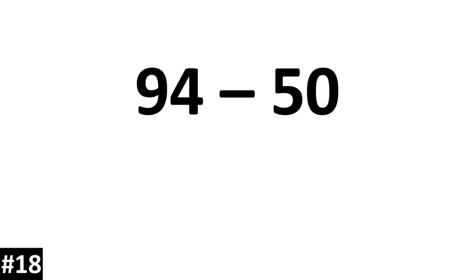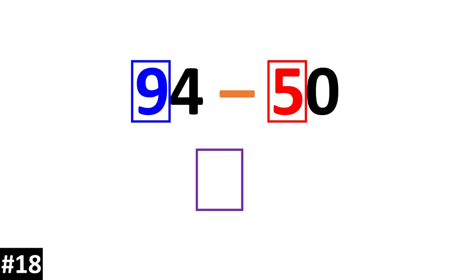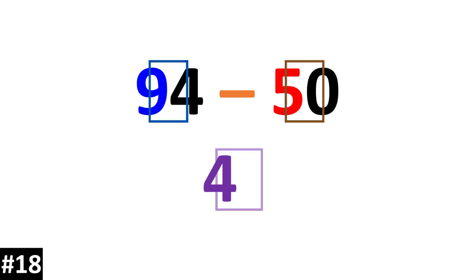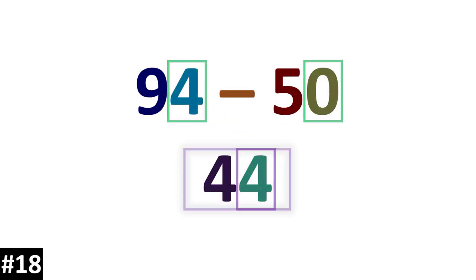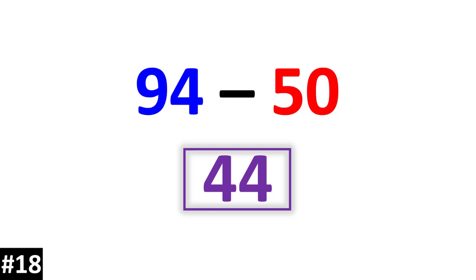94 minus 50. 9 10s minus 5 10s is 4 10s. We look to the ones: 4 minus 0 is 4. So our answer is 44.